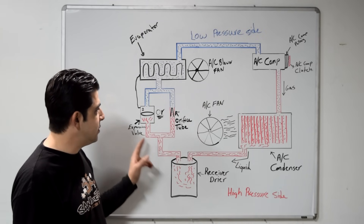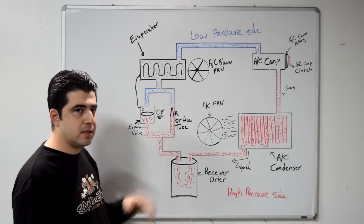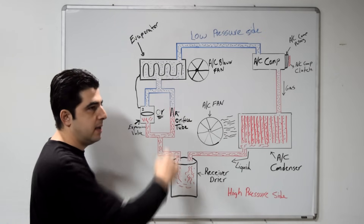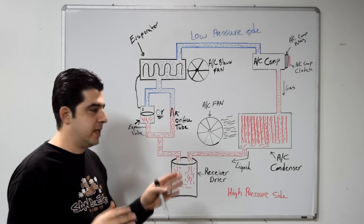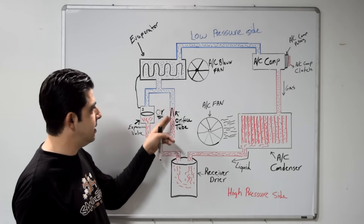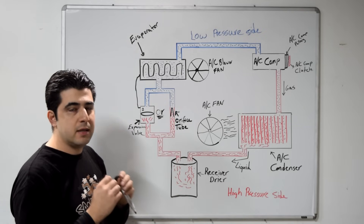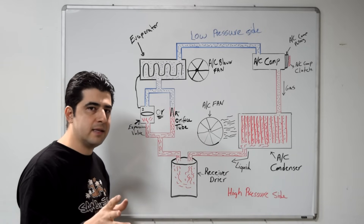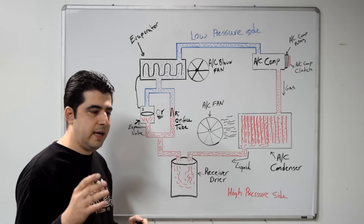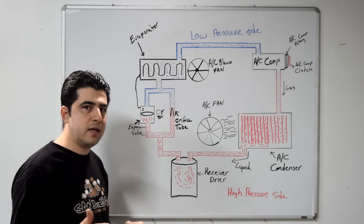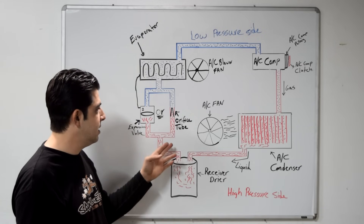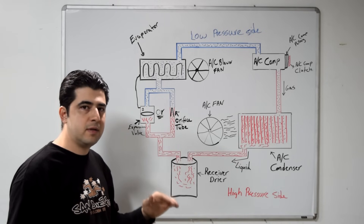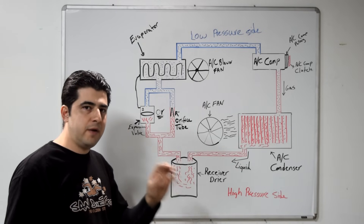As refrigerant passes through that tiny opening onto the low-pressure side, it expands quickly because it was in a high-pressure liquid state. As it moves to low pressure, it expands and turns into gas. As it turns into gas, it uses up a lot of its heat, so the refrigerant cools down quite rapidly.